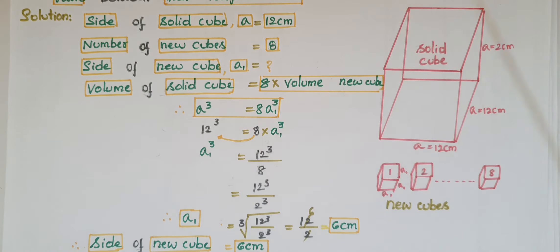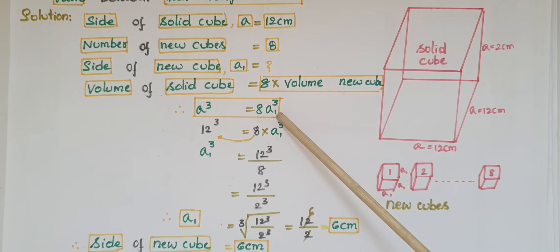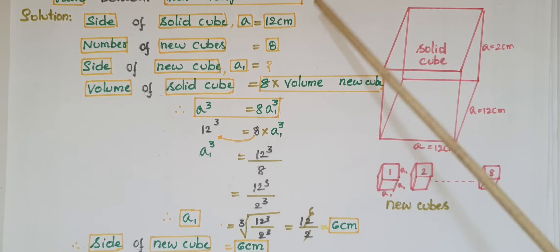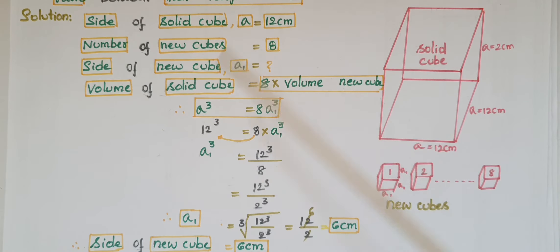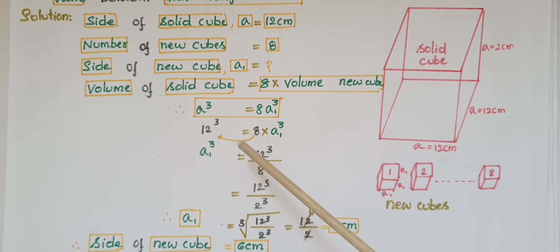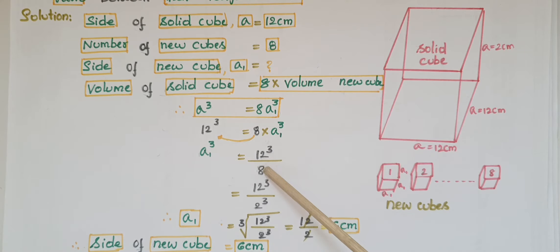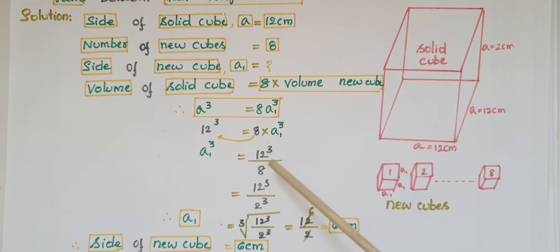Volume of solid cube is equal to 8 times volume of new cube, because the solid cube is cut into 8 equal volume new cubes. So a³ = 8 × a1³. Here a is 12 centimeters, so 12³ = 8 × a1³. Therefore a1³ = 12³ / 8.